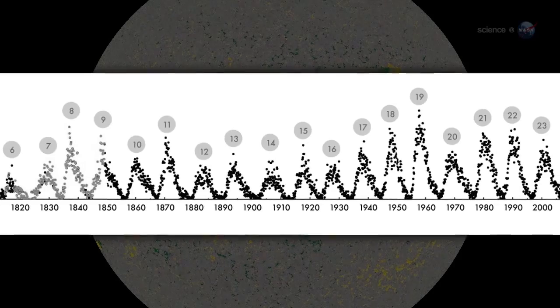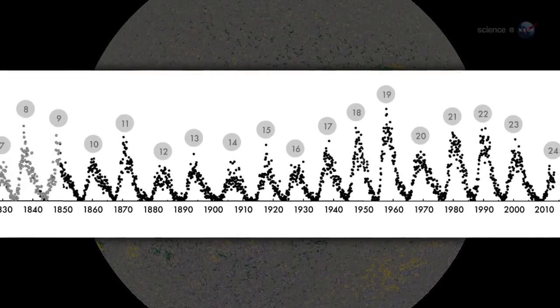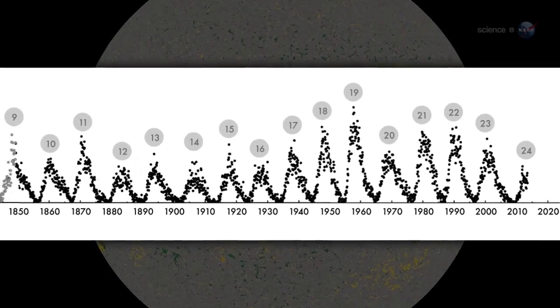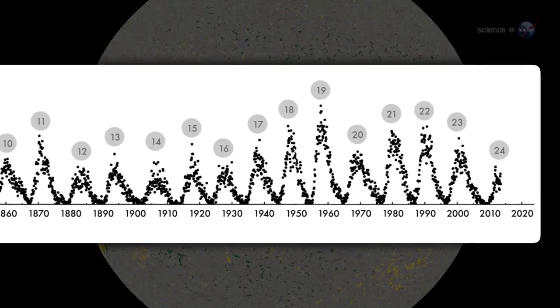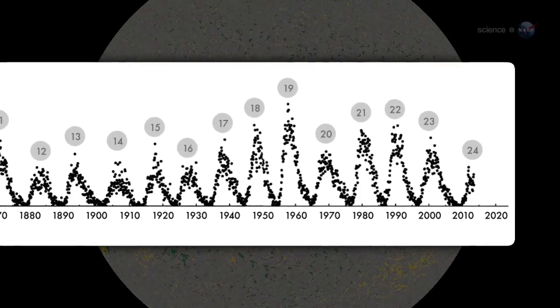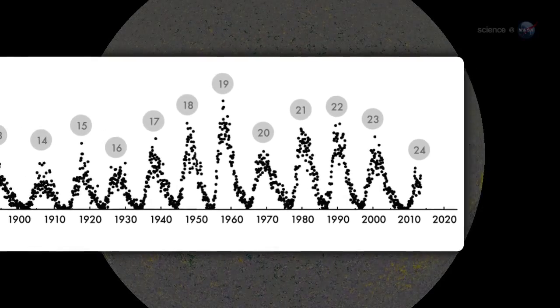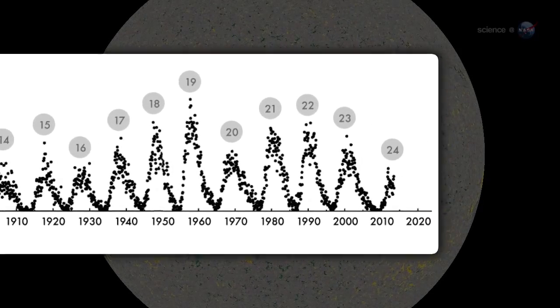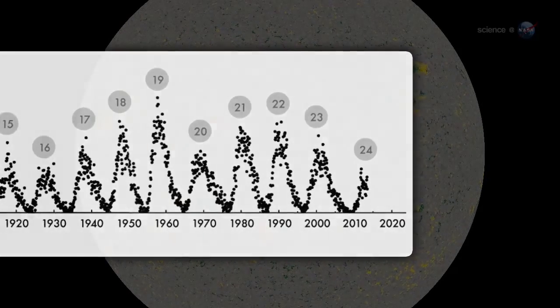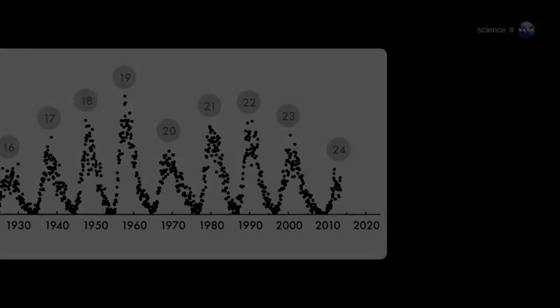The Sun's magnetic field changes polarity approximately every 11 years. It happens at the peak of each solar cycle, as the Sun's inner magnetic dynamo reorganizes itself. The coming reversal will mark the midpoint of solar cycle 24. Half of SolarMax will be behind us, with half yet to come.